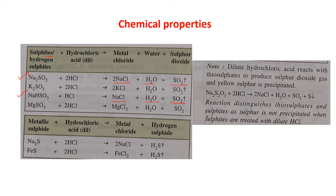When HCl reacts with metallic sulfide salts — such as Na₂S or FeS — it produces a metal chloride salt and hydrogen sulfide gas (H₂S). For example: Na₂S + 2HCl → 2NaCl + H₂S, and FeS + 2HCl → FeCl₂ + H₂S.